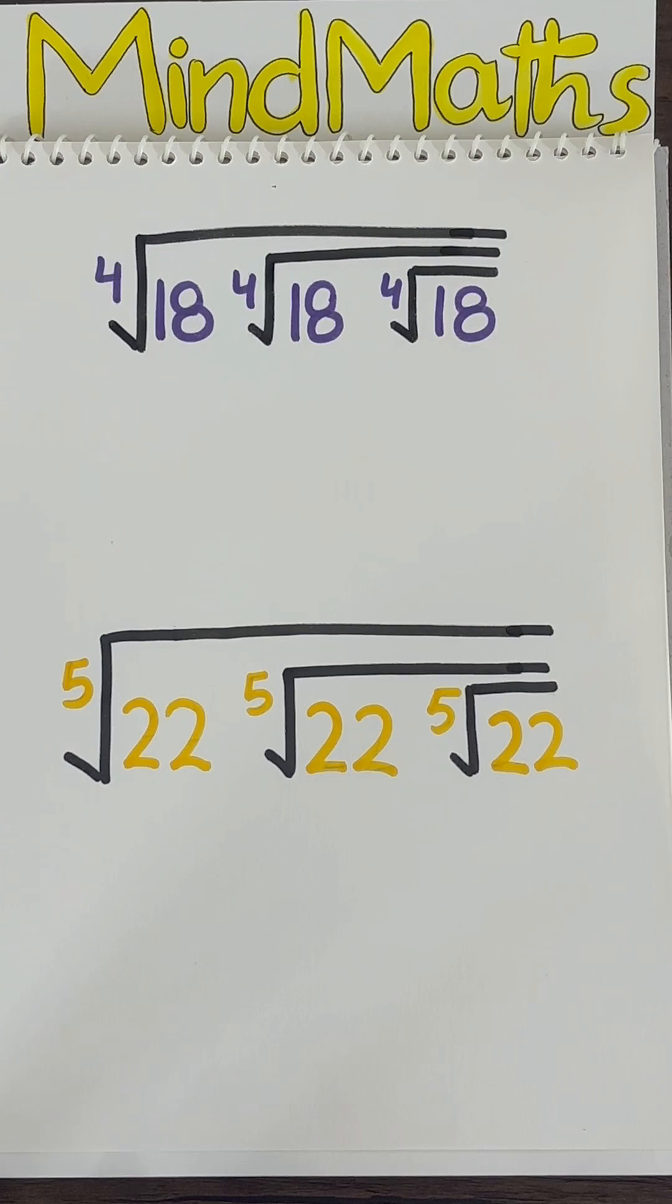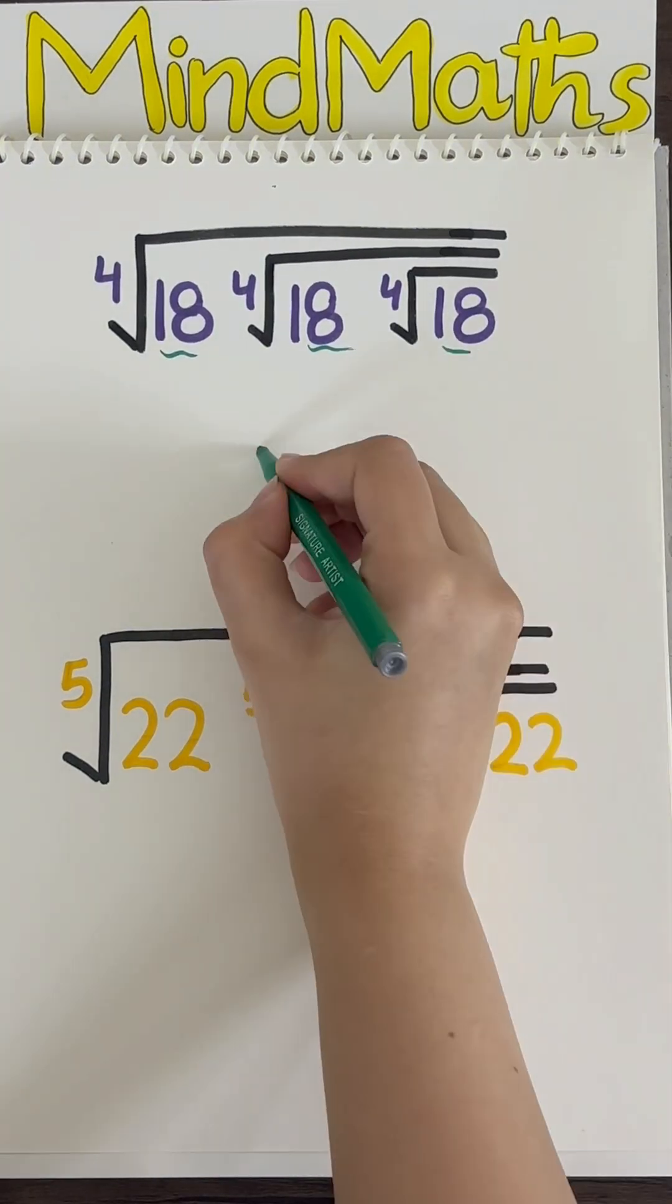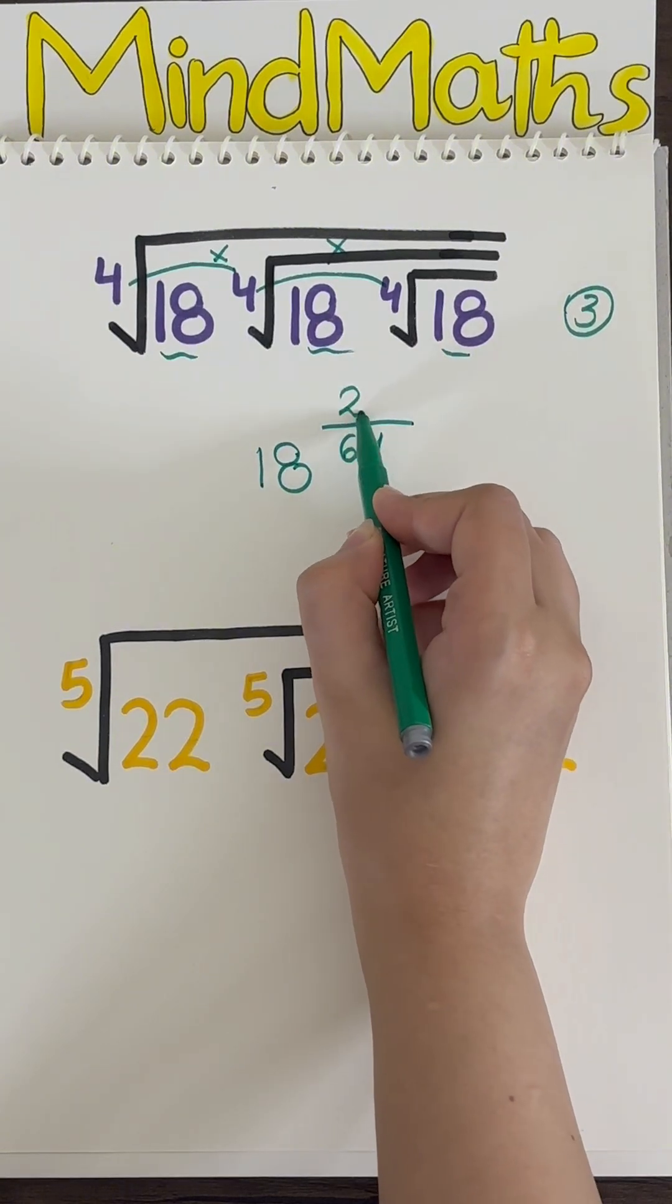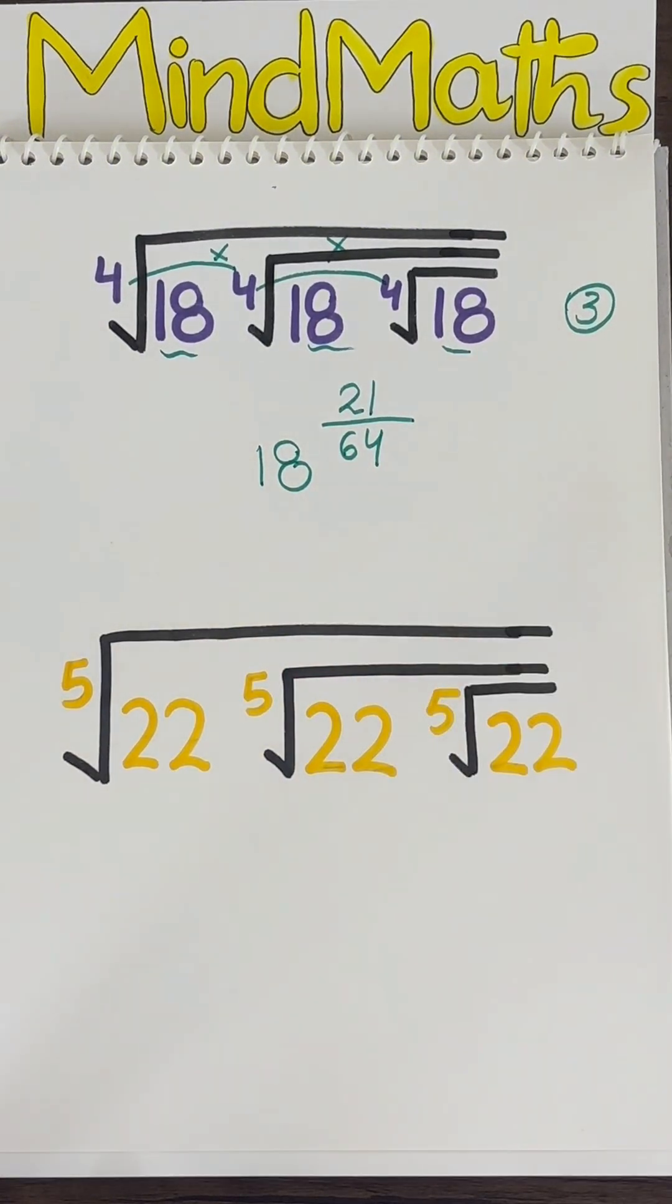Let's do another one, but this time a bit different. Taking 18 common raised to 64, then dividing it by 3, and we get 18 raised to the 21 by 64 is our final answer.